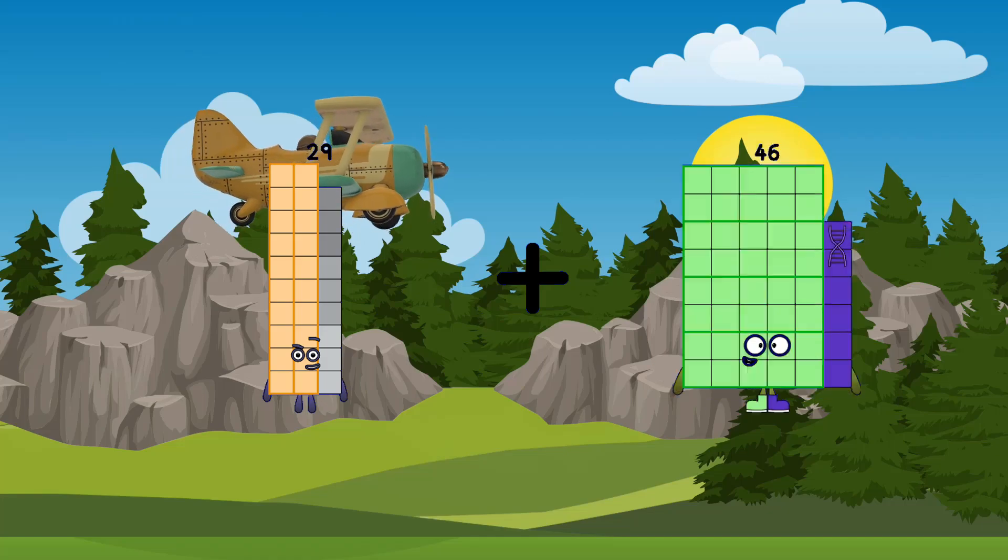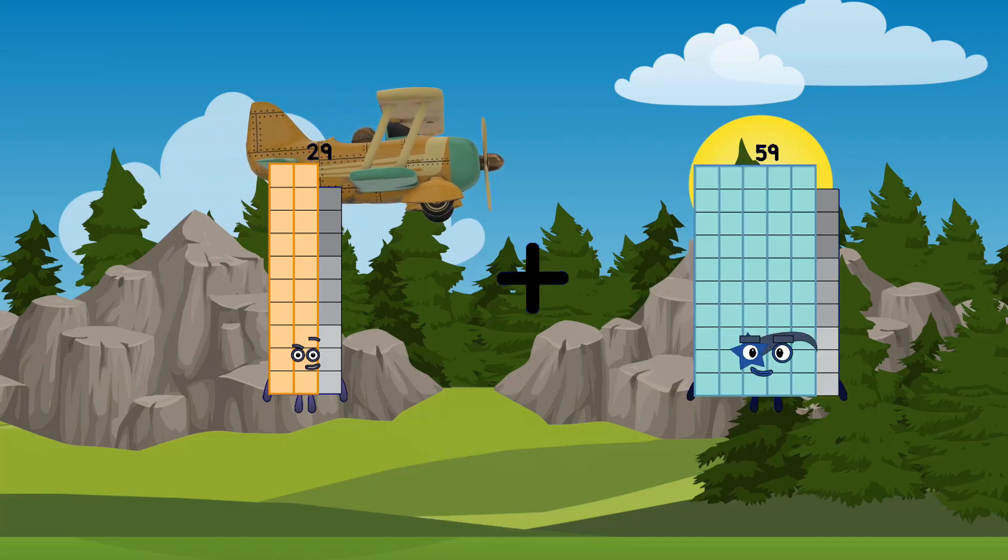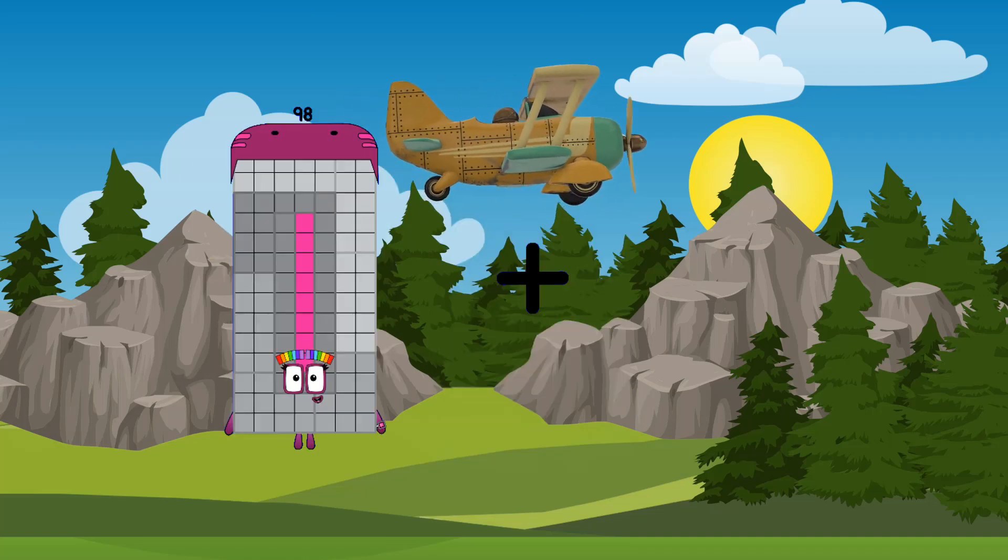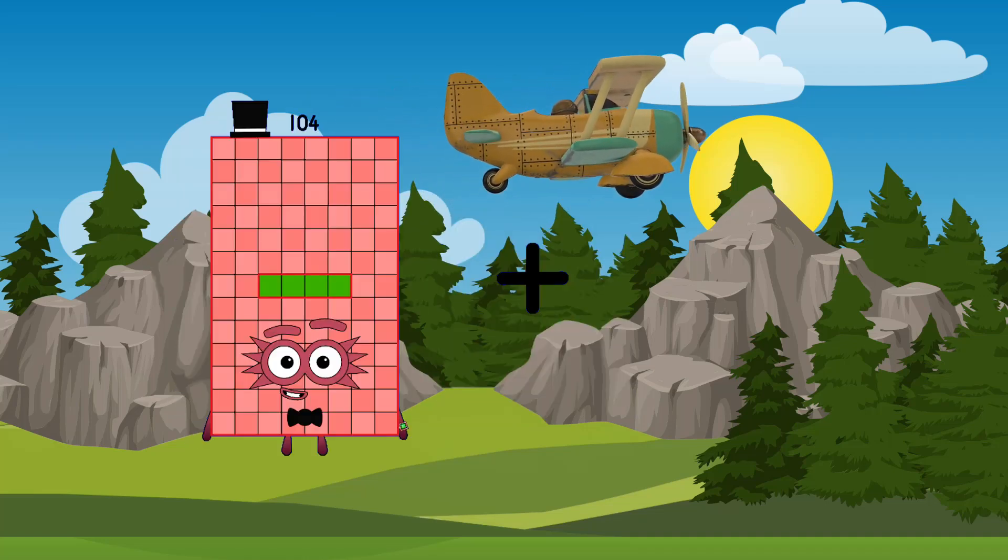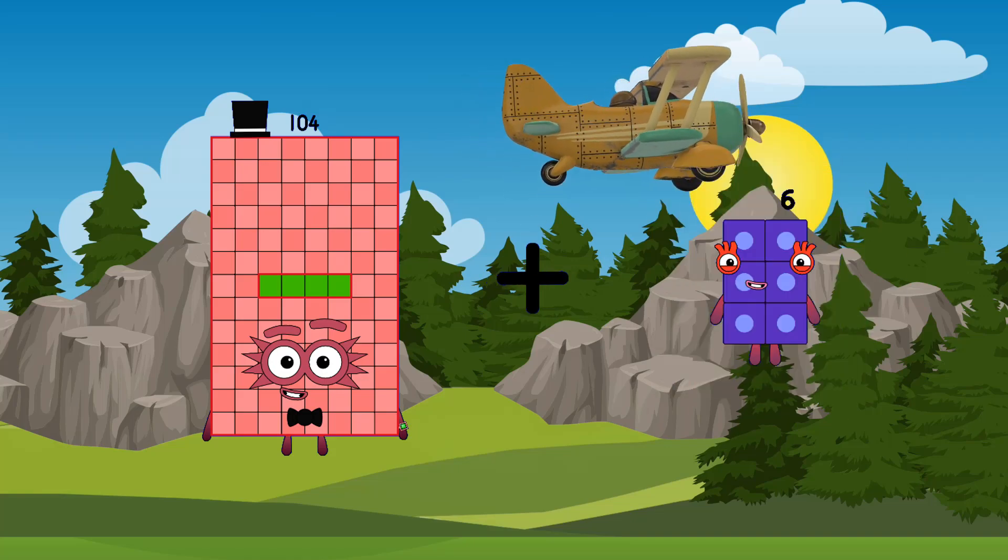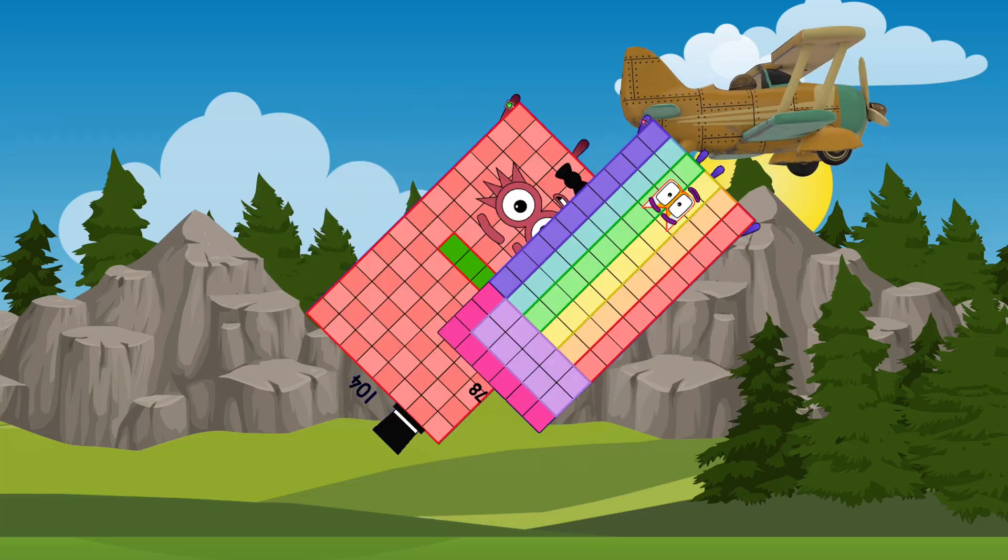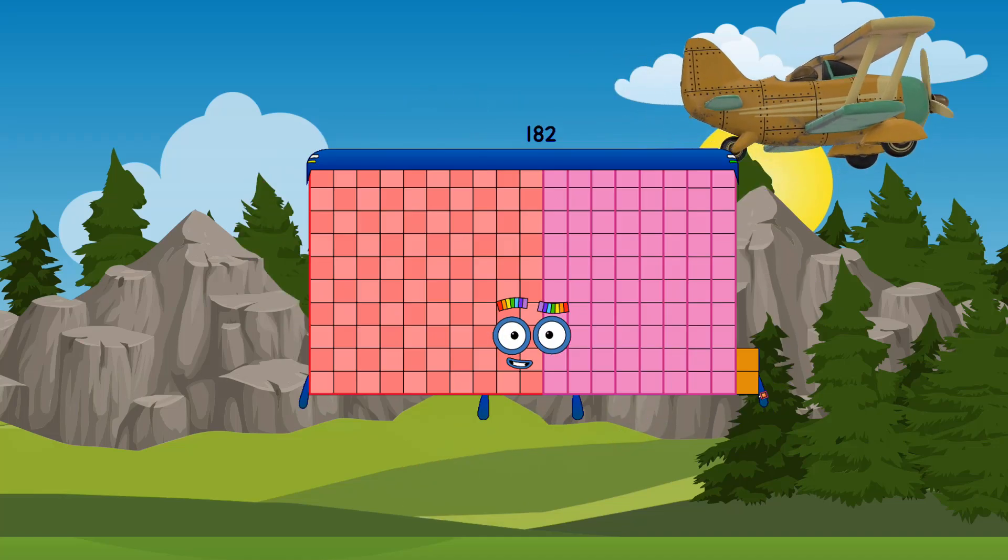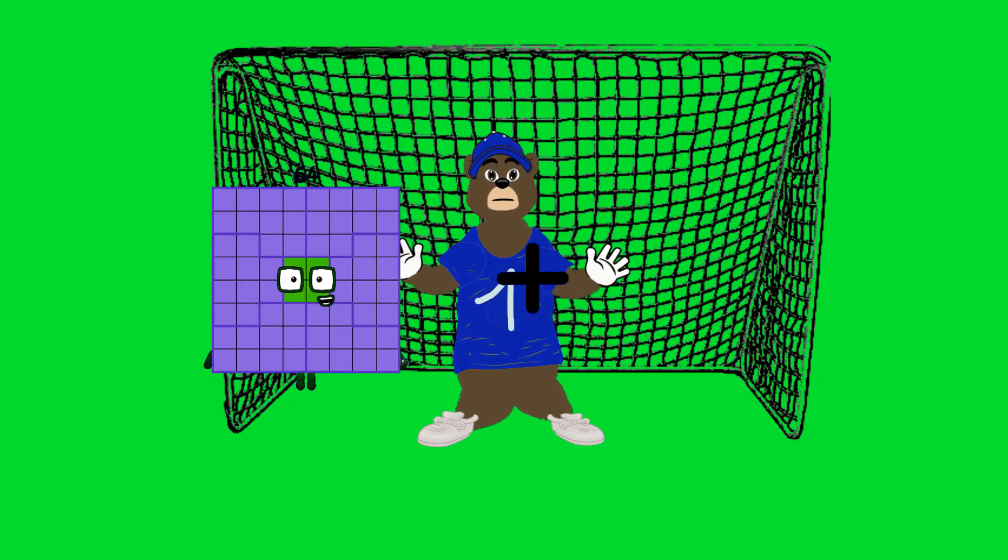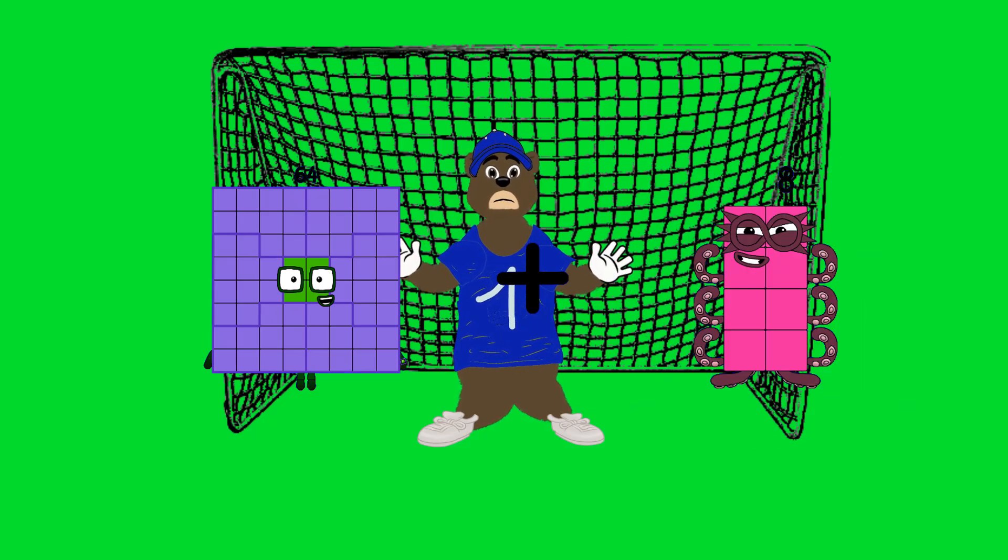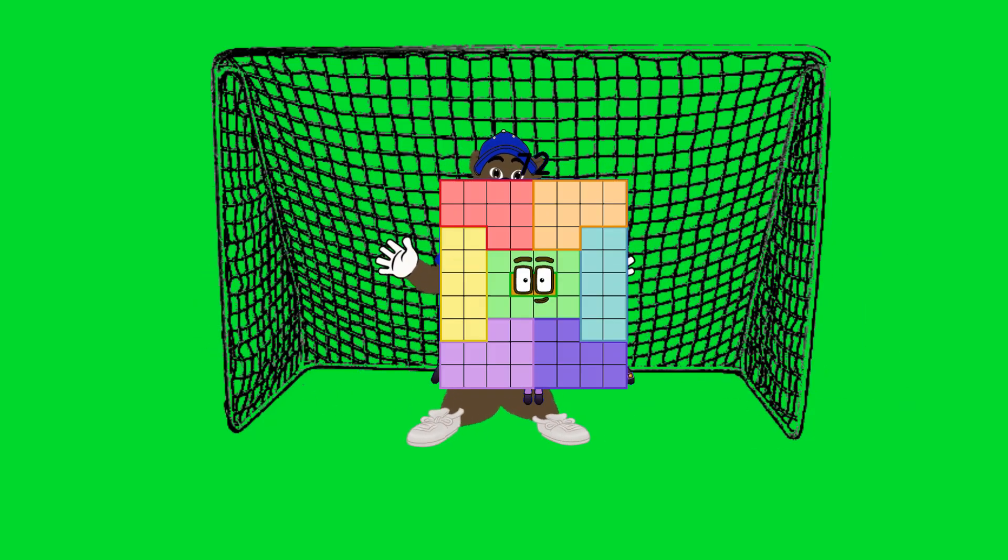29 plus 59 equals 88. 104 plus 78 equals 182. 64 plus 8 equals 72.